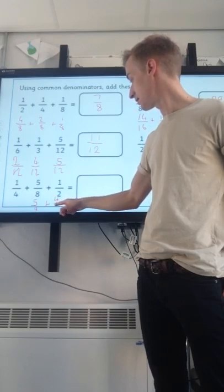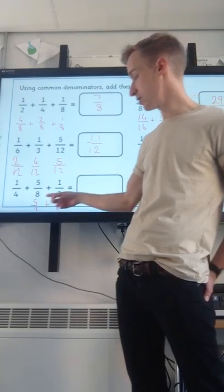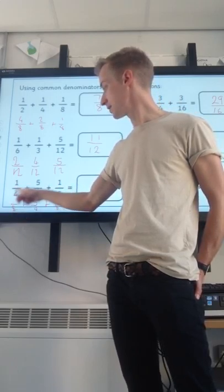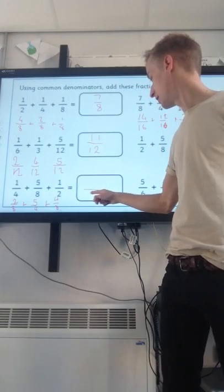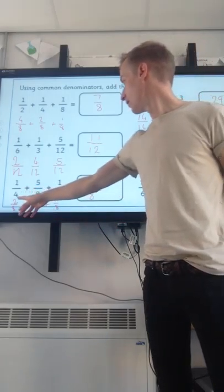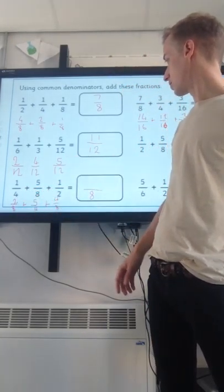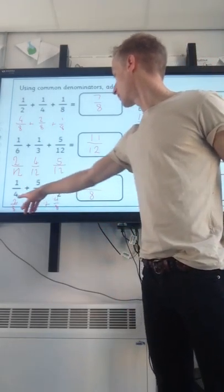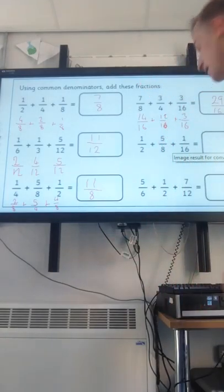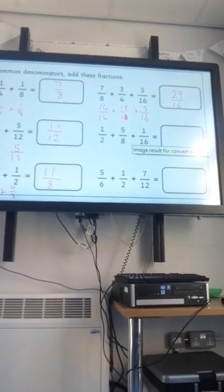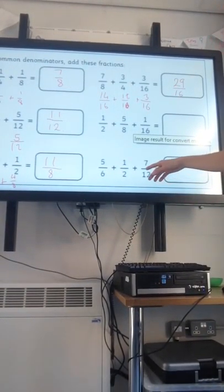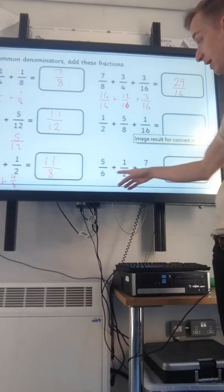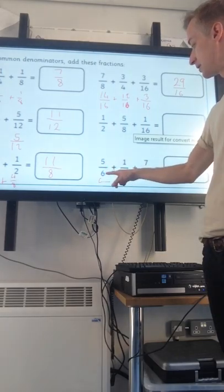We don't add or subtract denominators once we've got that common denominator. Last two. The sensible common denominator, I'm going to use eighths again. So we've got 5 eighths times it by 4 to turn it into eighths. 4 eighths is equivalent to a half. And double times 2. 4 times 2 is 8. So 1 times 2 is 2. The denominator stays the same. That looks like the same question. Different fractions. Same equivalent fractions. So I've got 2, add 7, add 4, 11 eighths again.